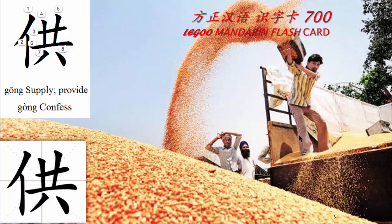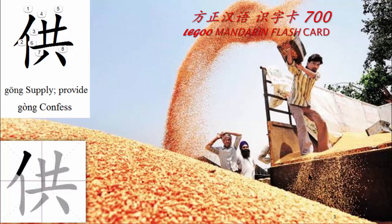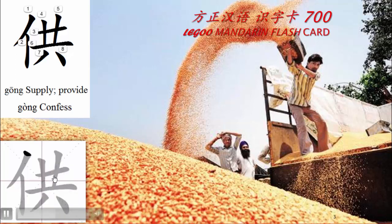供 means to supply, to provide. 供, 供应, 供应. The left side is 单人旁, the right side forms 供应. Together it is 供应. You can read it 供应.